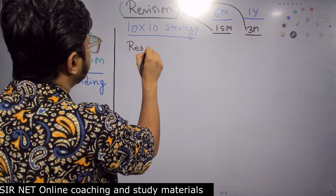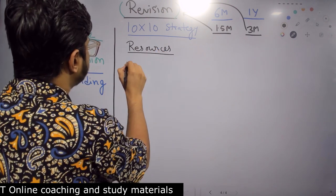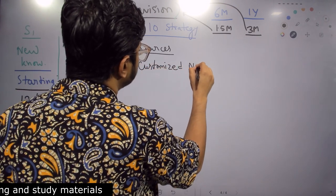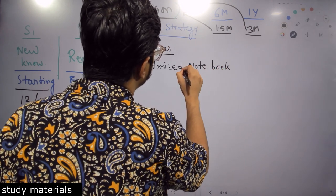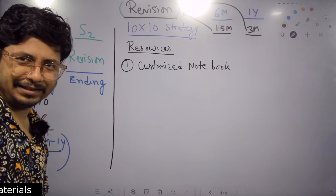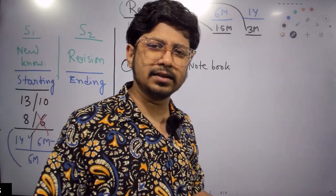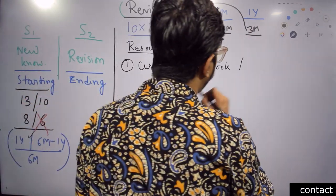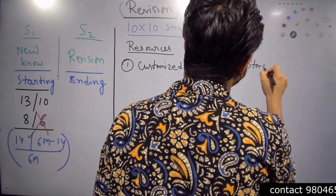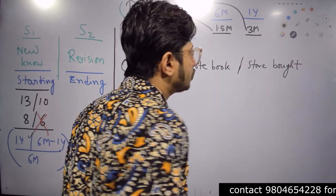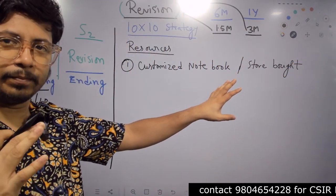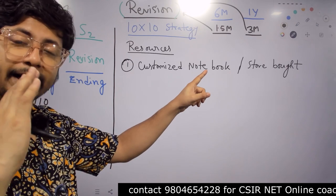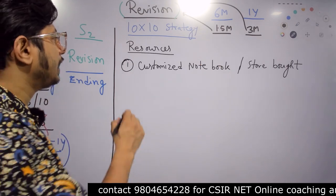So what we need to do? You need to write down important information. So the resources that you need for this revision - first is customized notebook, not the ready-made notebook. Now if you are lazy enough and you think you cannot make this and you have less time, let's say six months, five months, four months, their customized notebook won't help you. In that case, you can get a store-bought notebook. Store-bought notebook we also provide - Shomo's Biology Blueprint of Life Science book is already there. But again I am telling you, your own prepared notebook would work and comes more handy than store-bought notebook.